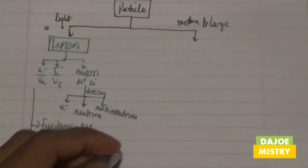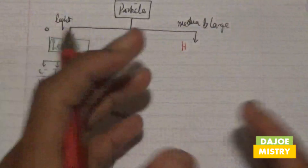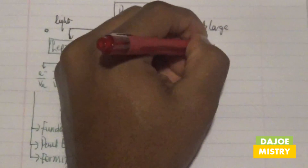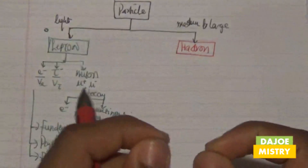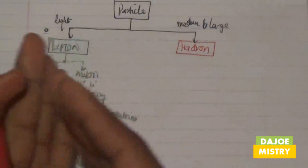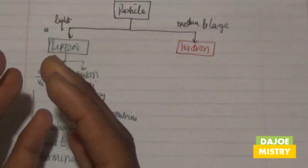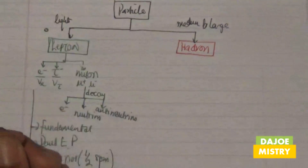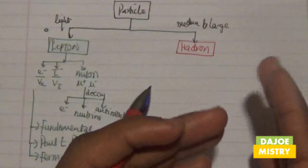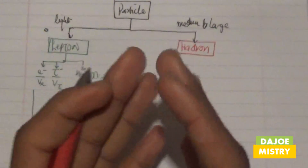Moving into the next part, which is called hadrons — hadrons are categorized as medium to large scale. Hadrons are particles that consist of quarks. Quarks are not put in the category of leptons because leptons are fundamental particles; they don't require quarks to form. However, hadrons consist of quarks interacting with each other.